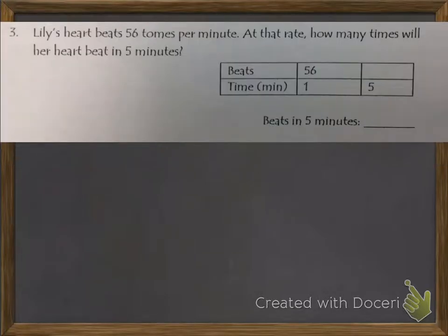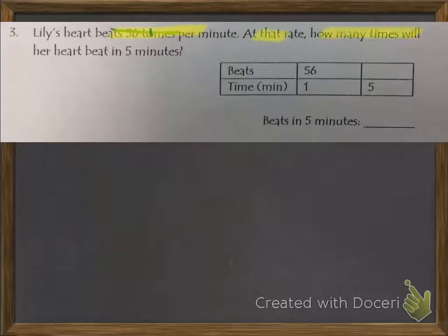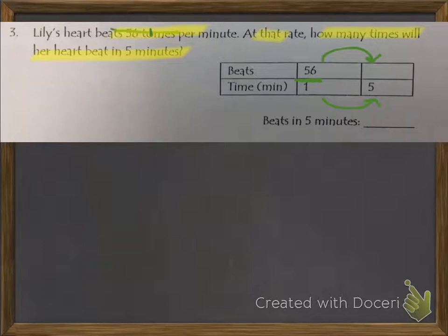I would like you to try this one on your own. Lily's heart beats 56 times per minute. At that rate, how many times will her heart beat in 5 minutes? You need to see the relationship between 1 and 5 — what you do to the denominator you do to the numerator. Please press pause and work this out on your own. We will check this one tomorrow with our table.